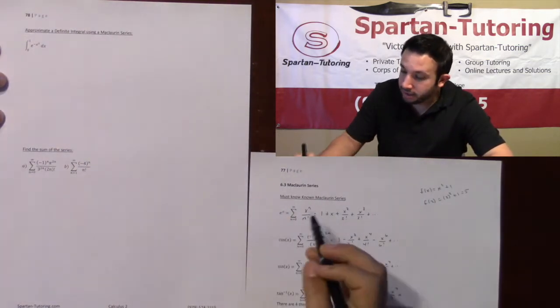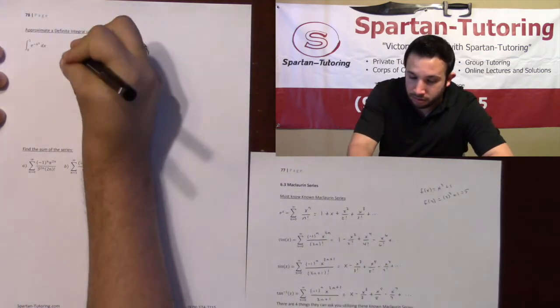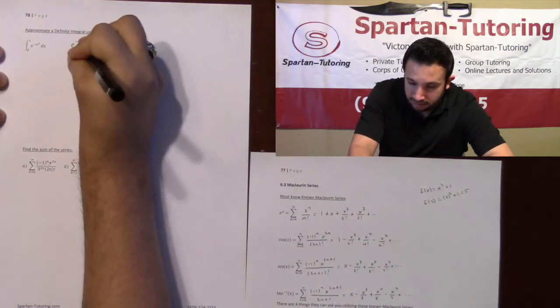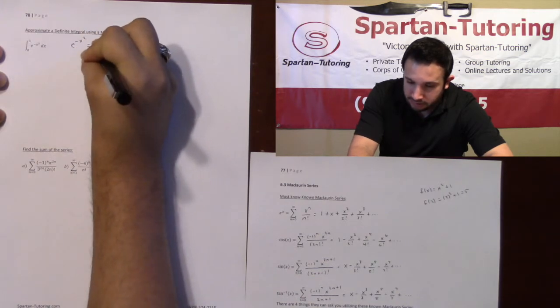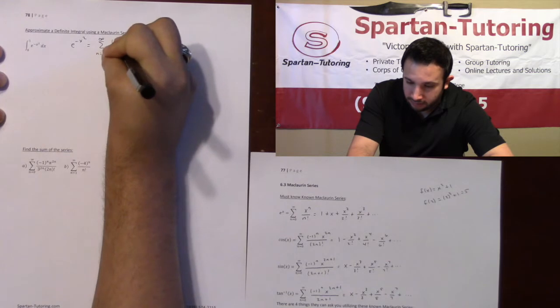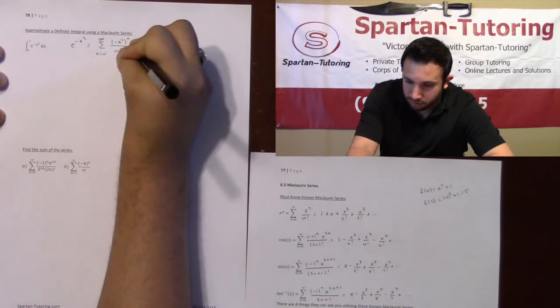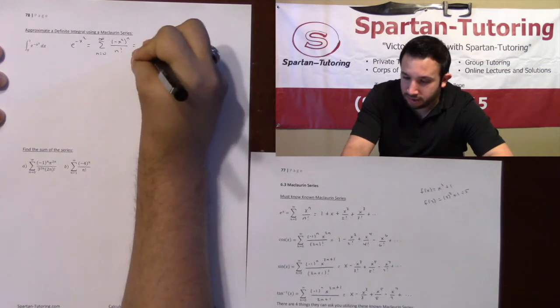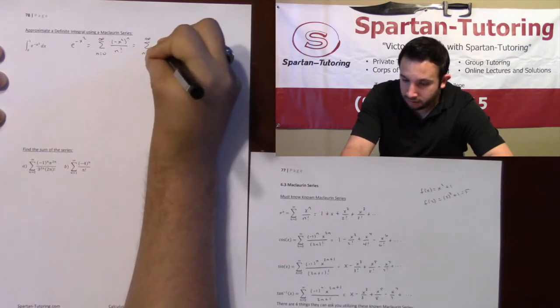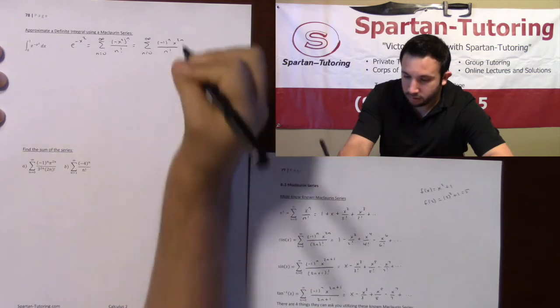We know that e to the x is x to the n over n factorial, so e to the negative x squared is going to be the sum from zero to infinity of negative x squared to the n over n factorial, which distributing that n, that's the sum from zero to infinity of negative one to the n, x to the two n, over that n factorial.